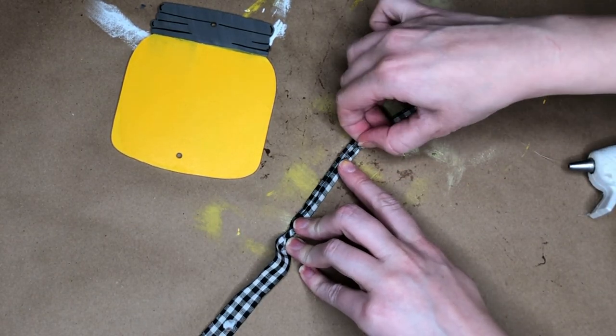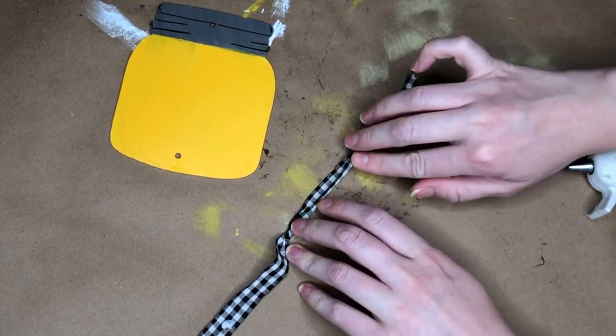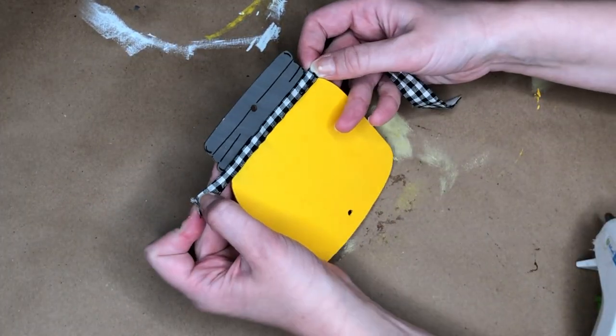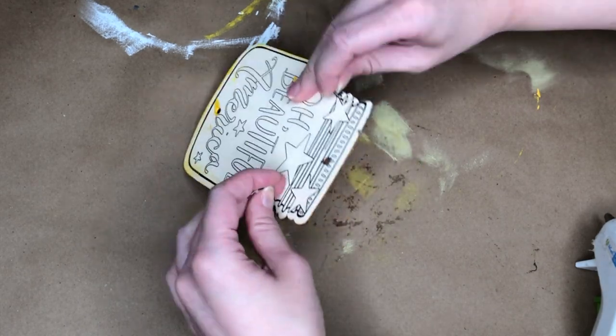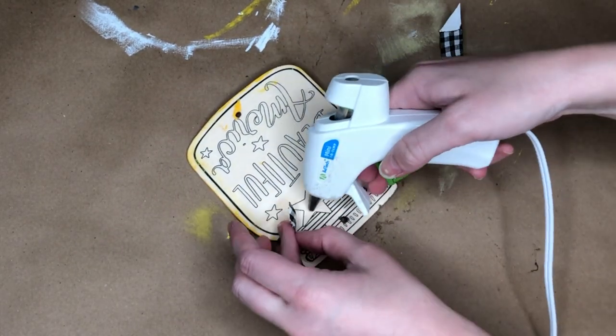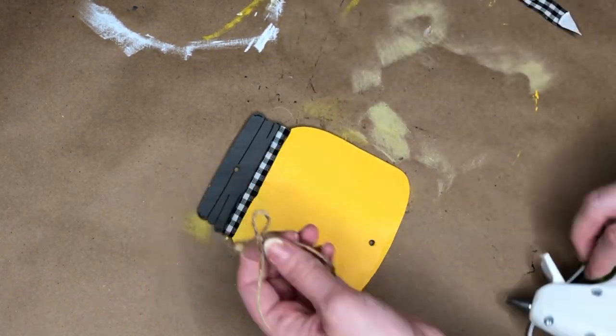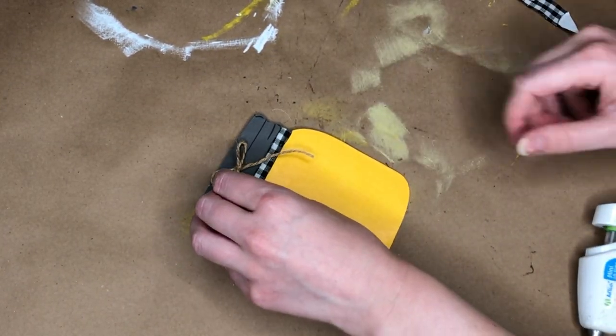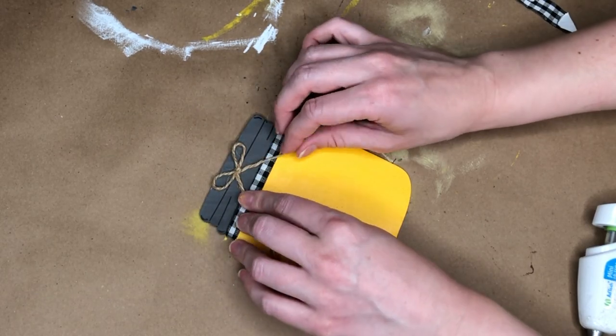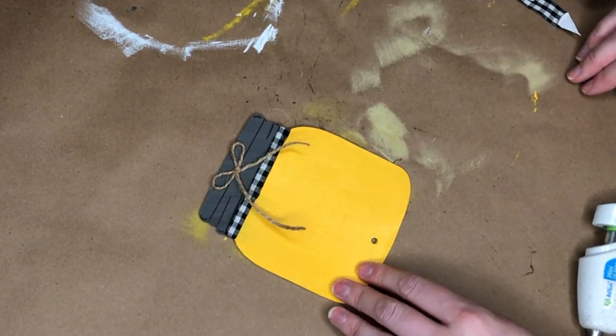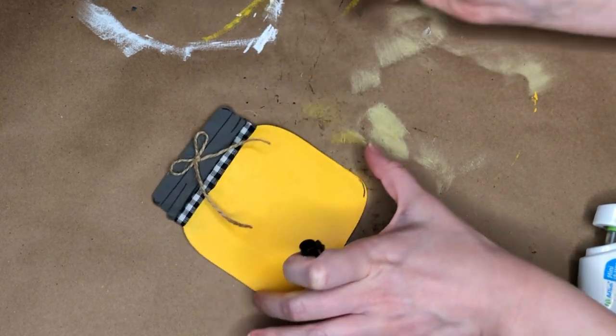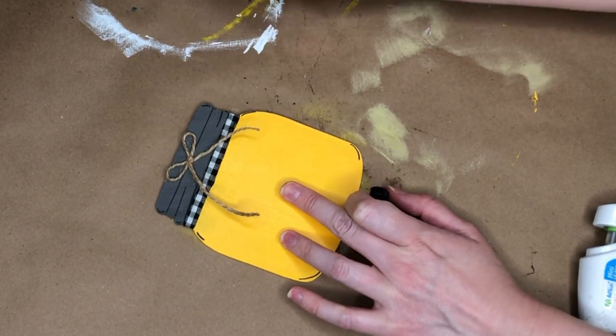I also wanted to incorporate this gingham ribbon again so I am folding it in half so it's a little bit thinner and then wrapping it around the mason jar and just hot gluing it to the back. I probably wouldn't have added the jute ribbon if it weren't for the hole in the top of it but I actually really like the way that it came out and I again took my black marker and just added a little bit of contouring to our honey pot.